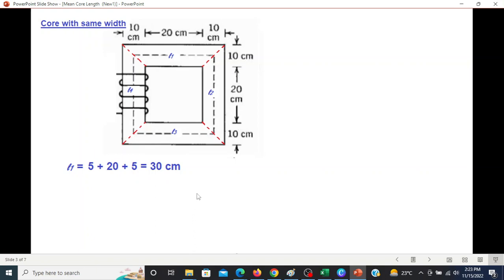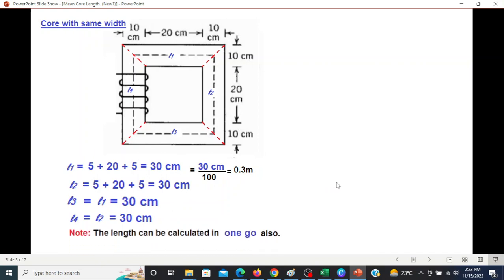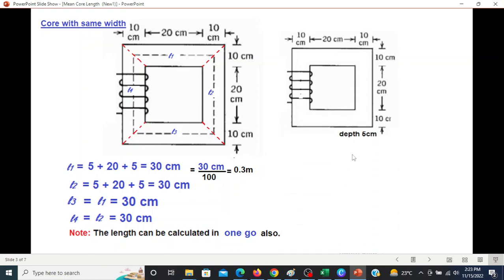And we calculate L2, L3, and L4. The dimension is the same and the length is the same, but the question we have solved uses meters, so we convert to meters by dividing by 100, so it is 0.3 meters. The length can be calculated in one go also because area is the same. Total length calculated instead of four parts. Okay, area calculate.